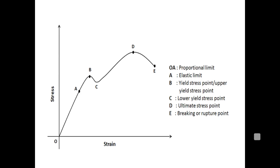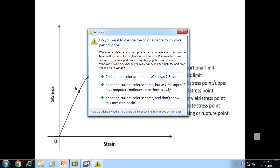On the stress-strain diagram for ductile material: point A is the elastic limit; before A we have the proportional limit where Hooke's law is applicable. Points B and C are the yield points where yielding takes place, meaning plasticity starts. Point D is the ultimate stress — the maximum point — and point E is the rupture or breaking point.